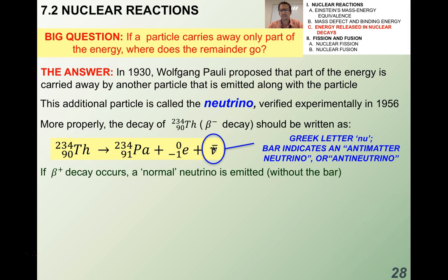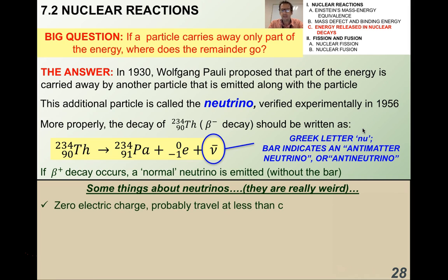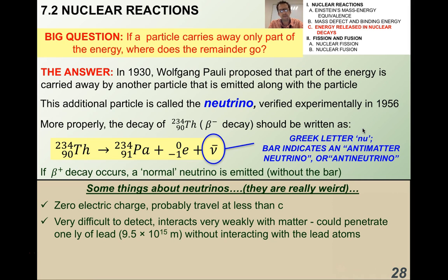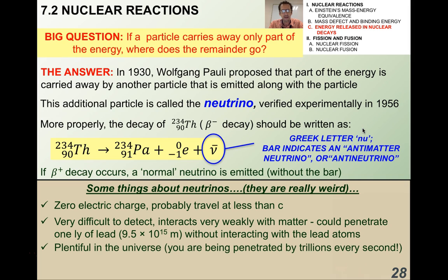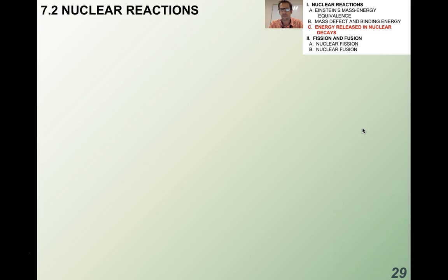The neutrino symbol is the Greek letter nu — not a V, even though it looks like one. If beta plus decay occurs, a normal neutrino is emitted without the bar. Neutrinos have zero electric charge, probably travel less than C, and are very difficult to detect because they interact very weakly with matter. We know there are a lot of them in the universe, and if the mass is determined, it could help explain dark matter and galaxy formation.